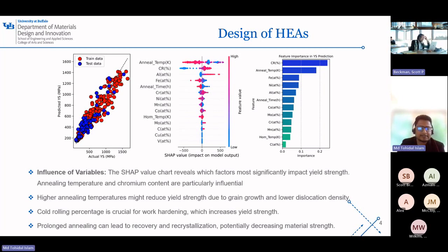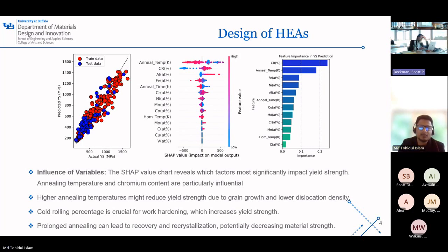As you can see here, higher annealing temperature reduces yield strength due to grain growth and lower dislocation density. We can also see the impact of cold rolling — that is the most important feature for defining yield strength.